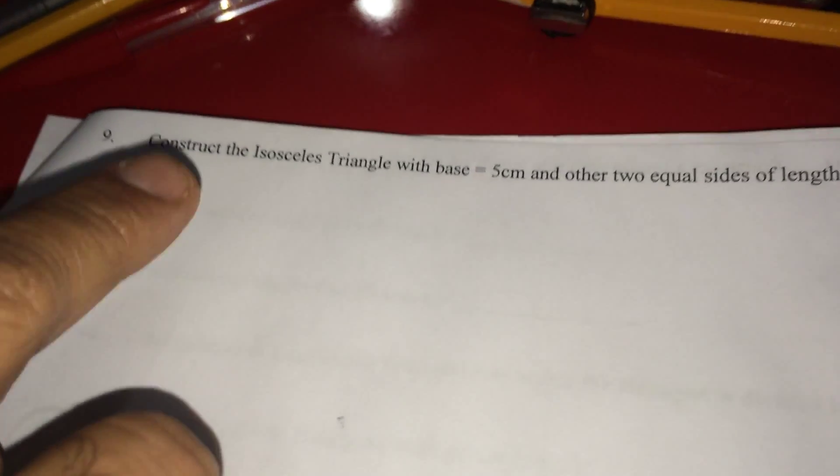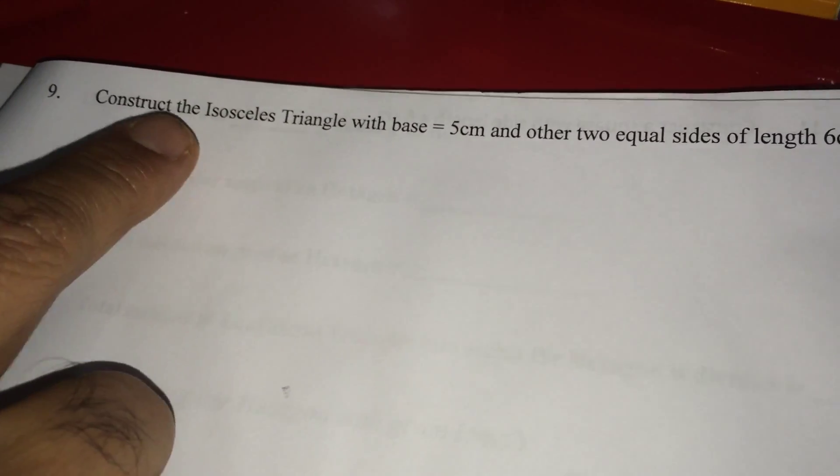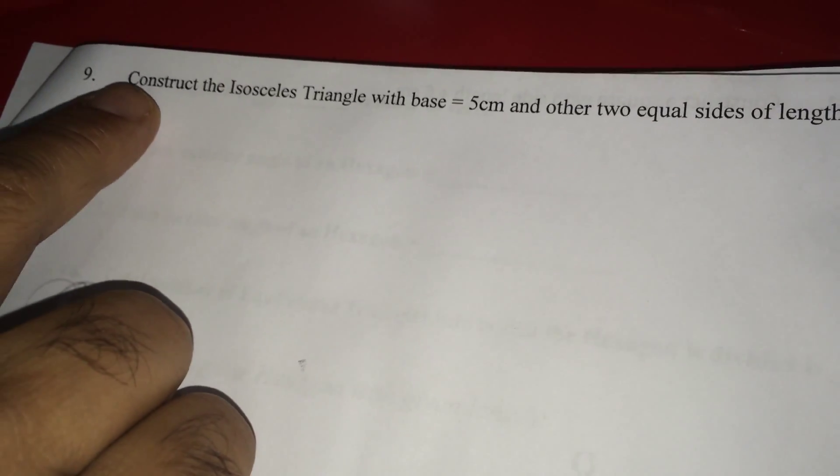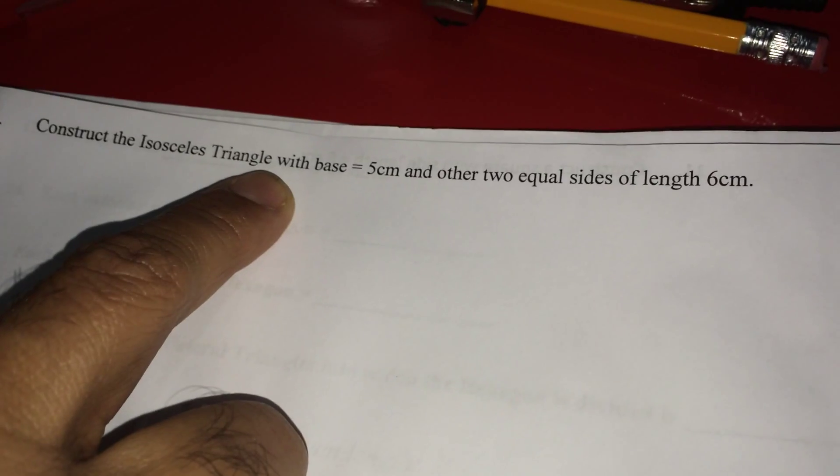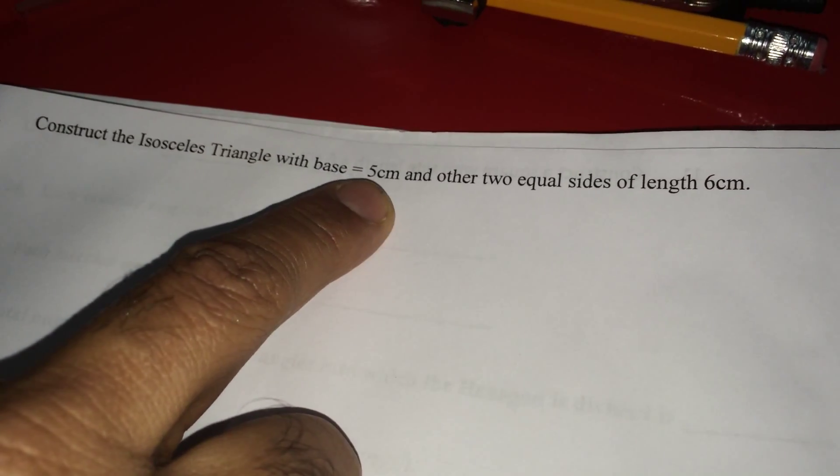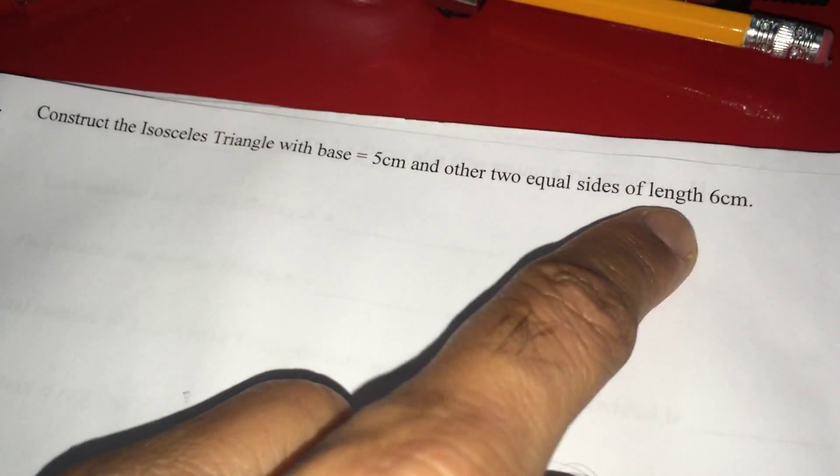Now, under this project of the constructions, I am going to show you the procedure, how to construct the isosceles triangle with base as 5 cm and other two equal sides of length 6 cm.